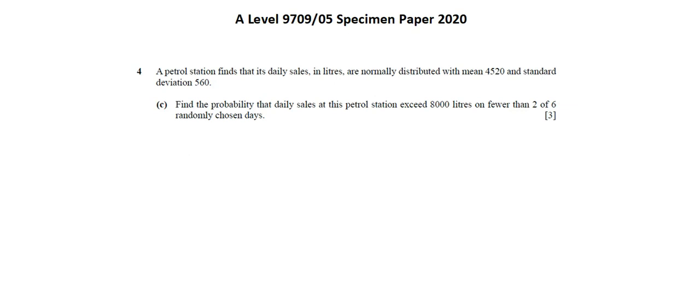In this case, we want to evaluate in a set number of trials, in this case 6 trials, 6 days, the possibility of a given number of successes, in this case, fewer than 2 successes. Success being defined as exceeding 8,000 liters. Here, we're working with a binomial distribution.